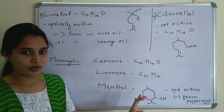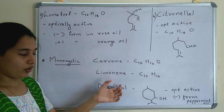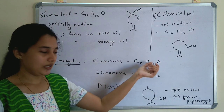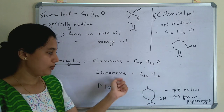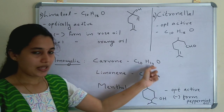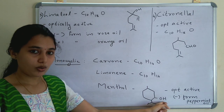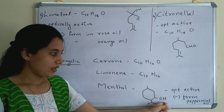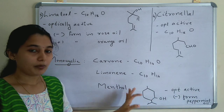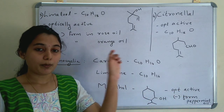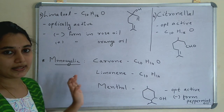Moving on to monocyclic terpenoids. Examples include carvone (C10H14O), limonene (C10H16, no functional group), and menthol. Menthol has an OH functional group, is optically active, and the minus form is found in peppermint oil. These are all monocyclic terpenoids.